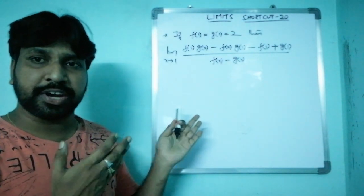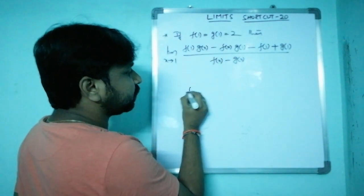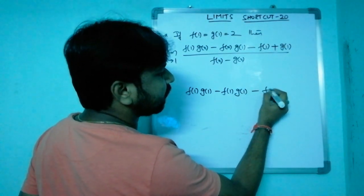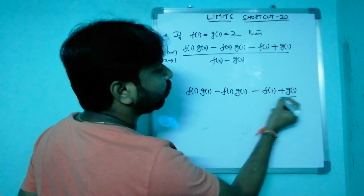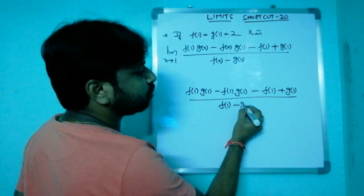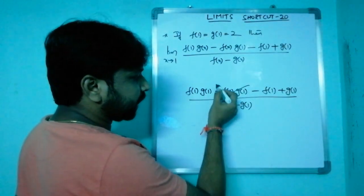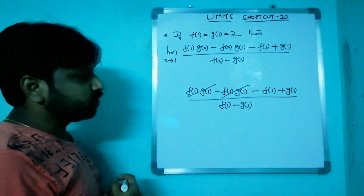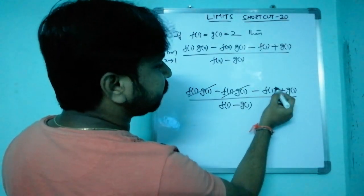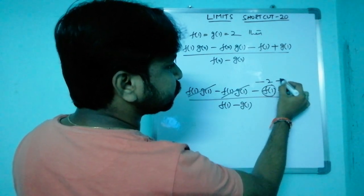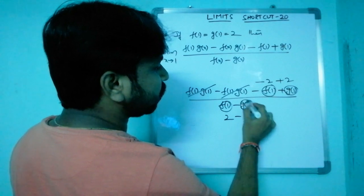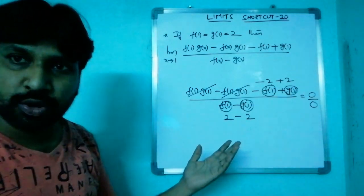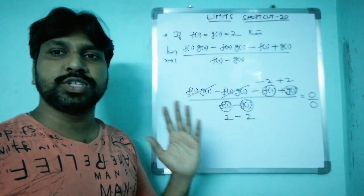First check: substituting x = 1 gives f(1)·g(1) - f(1)·g(1) - f(1) + g(1) in the numerator. The first two terms cancel, leaving -f(1) + g(1) = -2 + 2 = 0. The denominator is f(1) - g(1) = 2 - 2 = 0. So we get the 0/0 form, and we can apply L'Hôpital's rule.